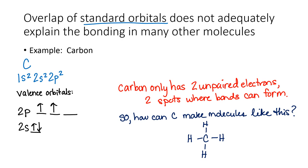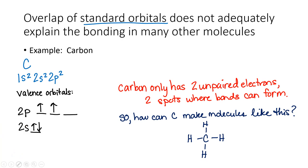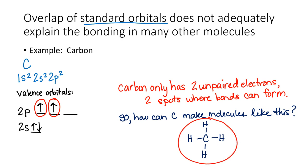A big example of this is carbon. If you look at the electron configuration of carbon — 1s2, 2s2, 2p2 — and if you look at the valence orbitals in carbon, we see there are just two unpaired electrons. So we might predict that carbon would only form two bonds. In reality, we see carbon often forming four bonds, like in this example of methane right here.